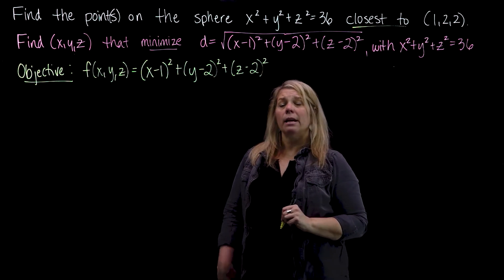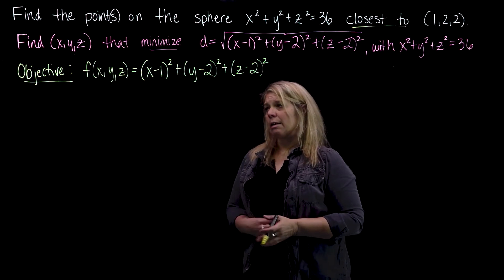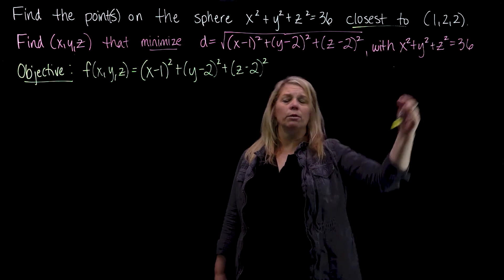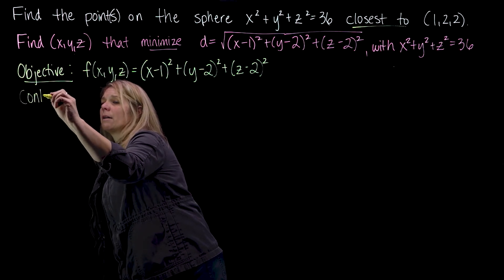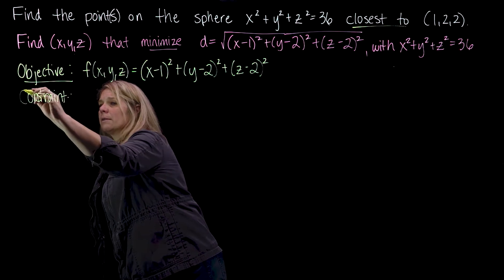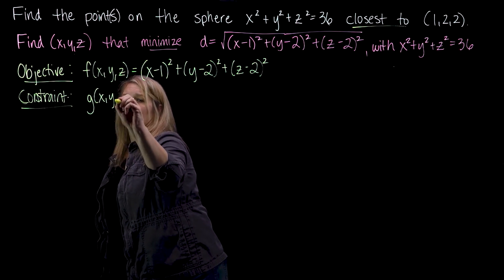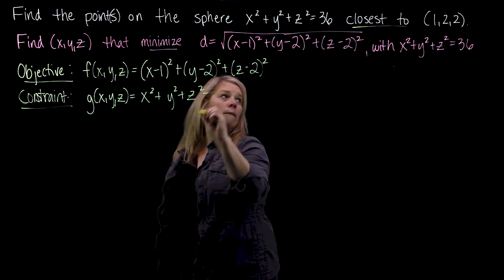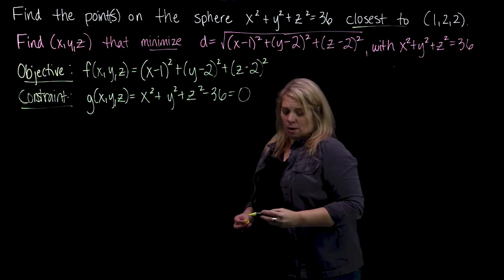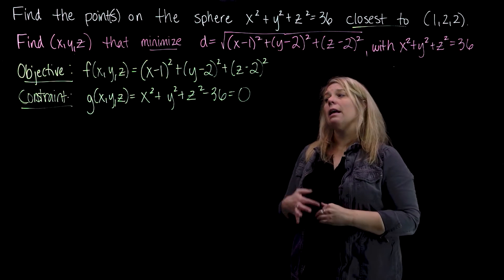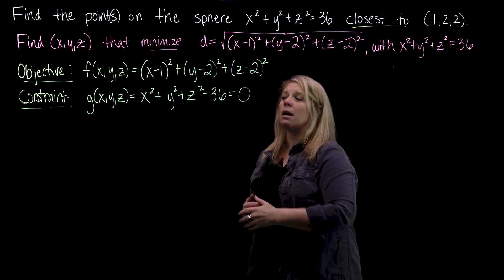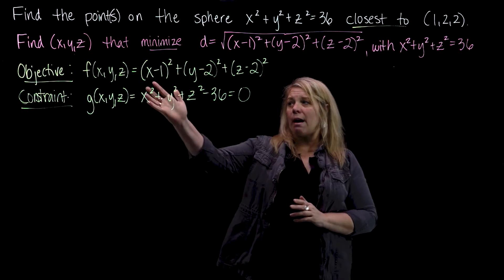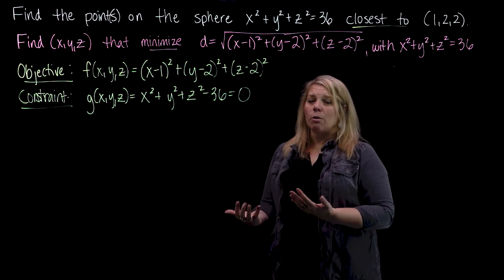In Lagrange's theorem, the objective function is called f of x, y, z, so I'm going to use that label. I'm just going to use the inside of the radical — the distance will be minimized when the inside of the radical is minimized. Then I need a constraint function. In Lagrange's theorem, you want the constraint as a function g(x, y, z) equal to 0, so I'll move terms from one side to the other. Lagrange's theorem says that if the objective function has extrema subject to the constraint, they will occur at values satisfying gradient of f equals lambda times gradient of g.